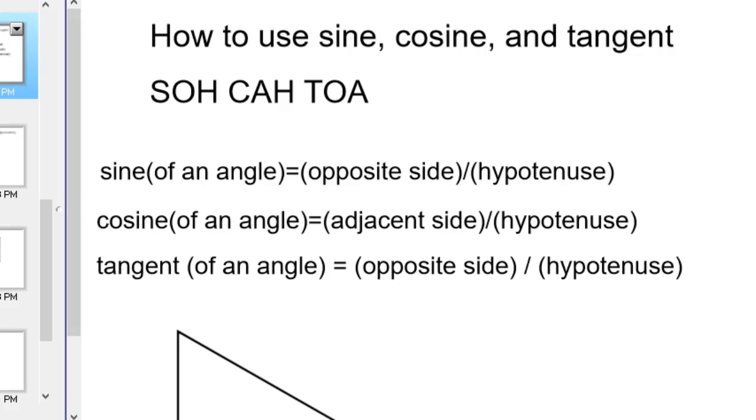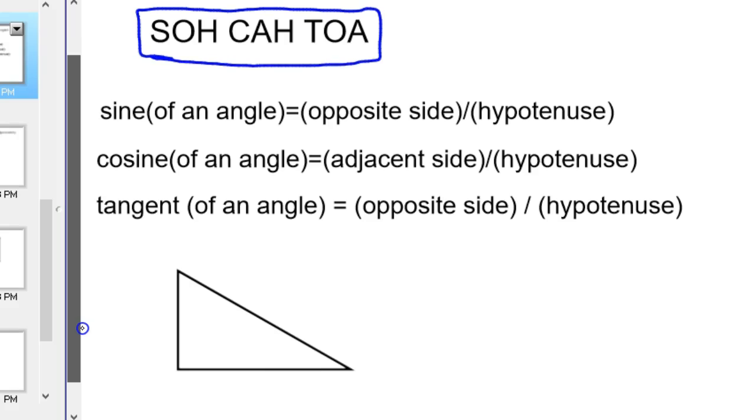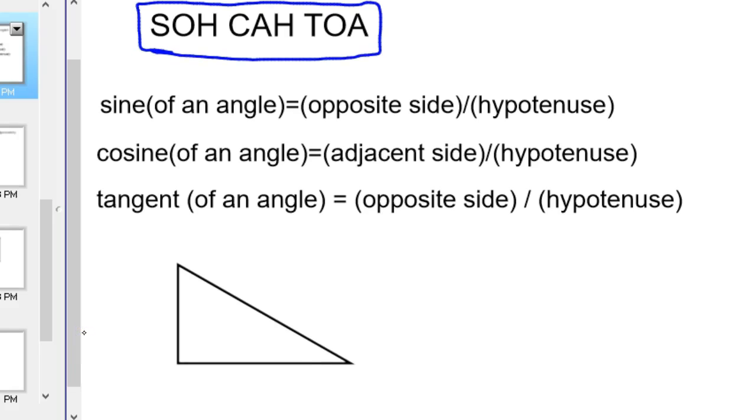So first off, what is sine, cosine, and tangent? Sometimes you'll hear the term, this kind of nonsense word SOHCAHTOA, or words, however you want to say that. But they're just a mnemonic device to help you remember what it means. So what it is, is sine of some angle is equal to the opposite side divided by the hypotenuse.